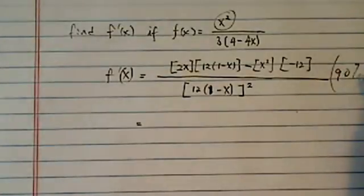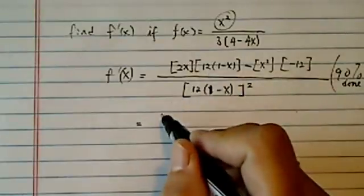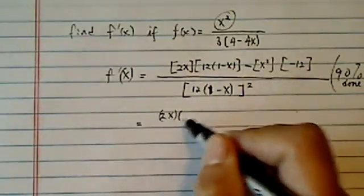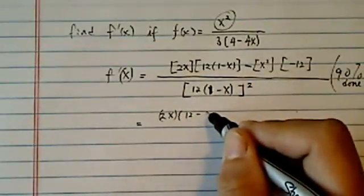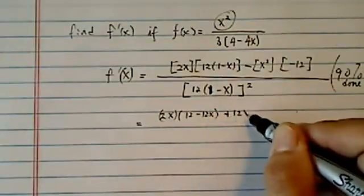If you've got over here, it's 90% done. Now you just have to clean it up. From here, I have a 2x times 12 minus 12x plus 12x squared.